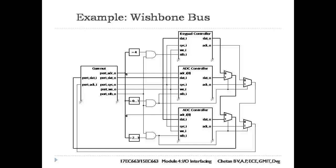The figure shows an example problem indicating connection of two ADC controllers with a keypad controller to a Gumnet core using distributed multiplexers. The Gumnet core is the single source for the port address, control signals, and output data signals, so no multiplexer is needed for those signals. The controllers each provide input data and acknowledgement signals, so distributed multiplexers are needed for them. We can decode the port address to derive the controller strobe signals and multiplexer select signals.